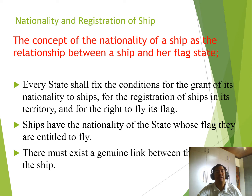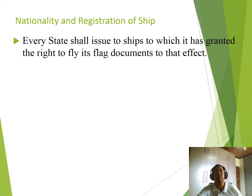The concept of nationality of a ship relates to the relationship between a ship and her flag state. Every state shall fix the conditions for the grant of its nationality to ships, for the registration of ships in its territory, and for the right to fly its flag. There must exist a genuine link between the state and the ship. Every state shall issue ships to which it has granted the right to fly its flag documents to that effect, and the ship must be inspected by a recognized organization to certify it as seaworthy and complying with all requirements of the flag state.